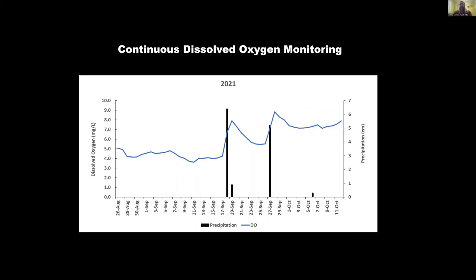Last year we didn't have any beaver dam building activity in the West Fork, and we don't see those sharp drops in dissolved oxygen. We do see increases in dissolved oxygen with rainfall events and slight increases in flow. Water turnover rate is really driving the amount of dissolved oxygen in those ponds.